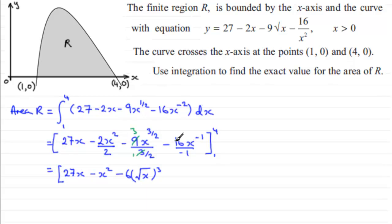And then for this last term, we've got minus 16x to the minus 1 divided by minus 1, so these two negatives are going to make a positive. You've got 16 multiplied by essentially 1 over x, which is going to give you 16 over x. And we've got our limits between 1 and 4.